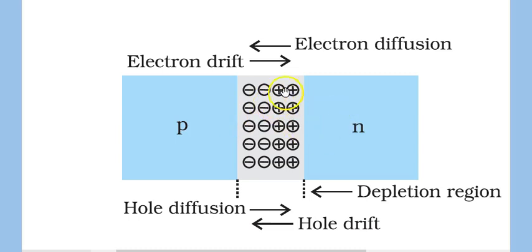Each electron that moves toward the p-side and recombines with a hole results in one fixed positive ion in the n-region and one fixed negative ion in the p-region. This system of recombination results in an area depleted of mobile charges.